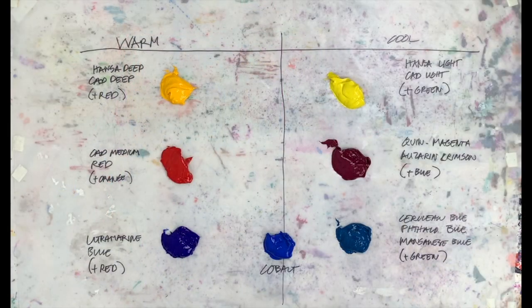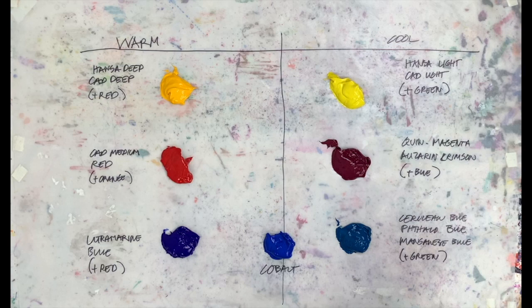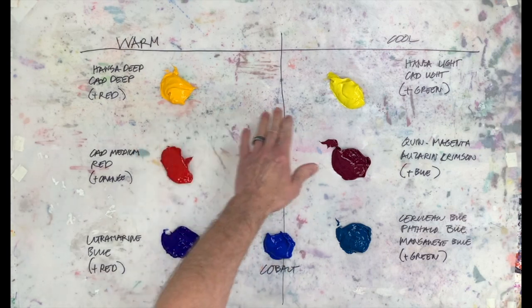Okay, here we are at the palette. So let's take a look at the typical primary colors that we all use that most all manufacturers make. Now I've got a warm column and a cool column, and we're going to start with the yellow.